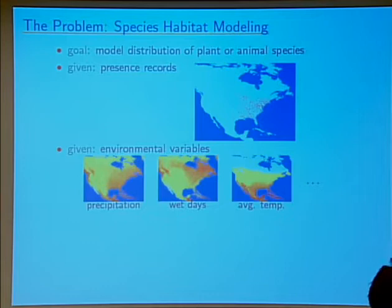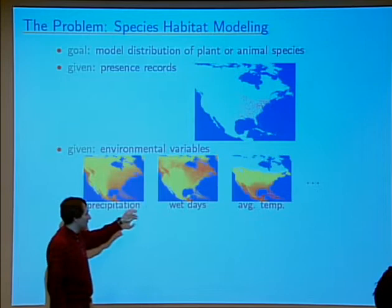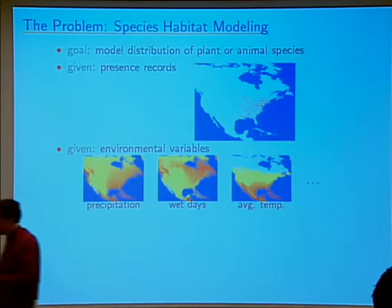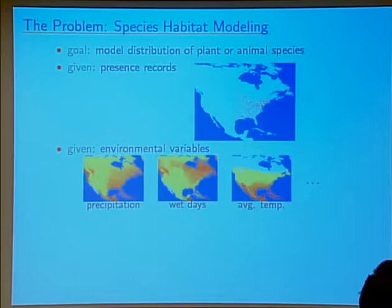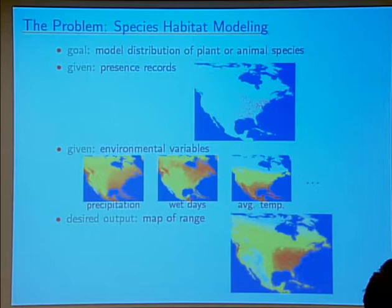We're also given a set of environmental variables. These tell us, for each point on a map, things like how much it rains in a year, the number of wet days in a year, the average temperature in a year, and so on. The goal is to produce a map of the range of this species.